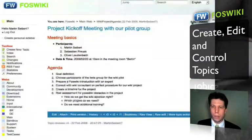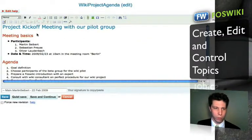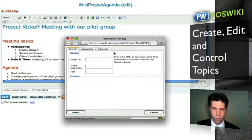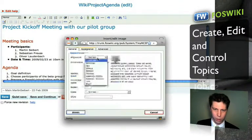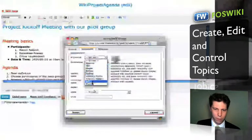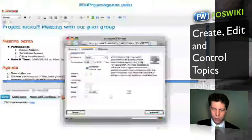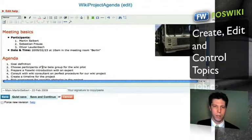FossWiki gives you even more possibilities to format your page. You can also add images. I would like to have this image on the left side — I can see here where it should be placed. I click edit, the picture appears, and I hit save.